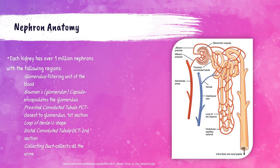The basic functional unit of the kidney is the nephron, and there are over a million nephrons in each kidney. The glomerulus is the blood-filtering component. The Bowman's or glomerular capsule encapsulates the glomerulus. The proximal convoluted tubule (PCT) is the first section, then the loop of Henle, then the distal convoluted tubule (DCT), and the collecting duct collects all of the urine. What is important here is understanding what the kidney does, what can happen when it fails, and how we test for its failure in the clinical laboratory.